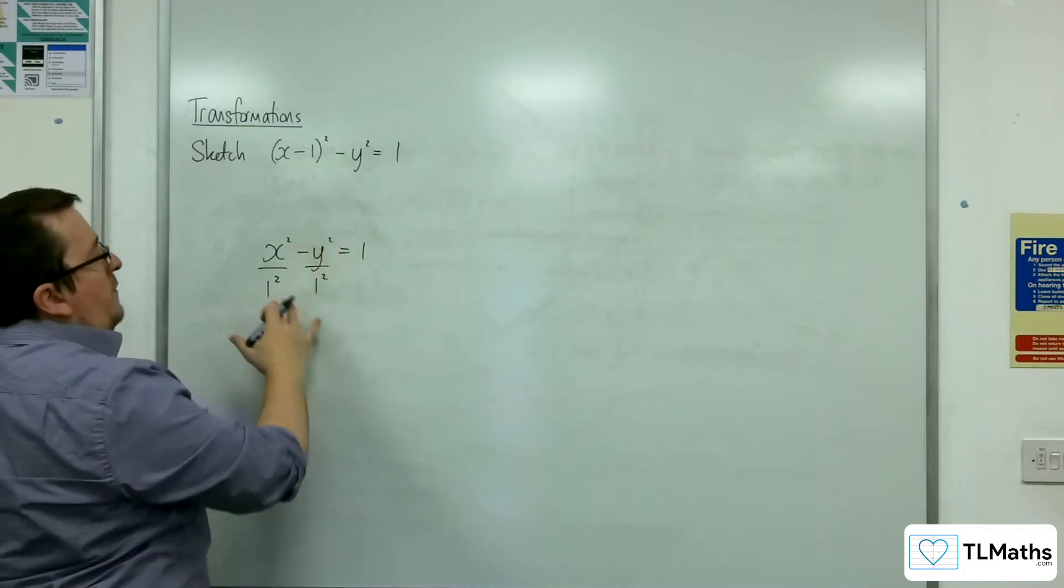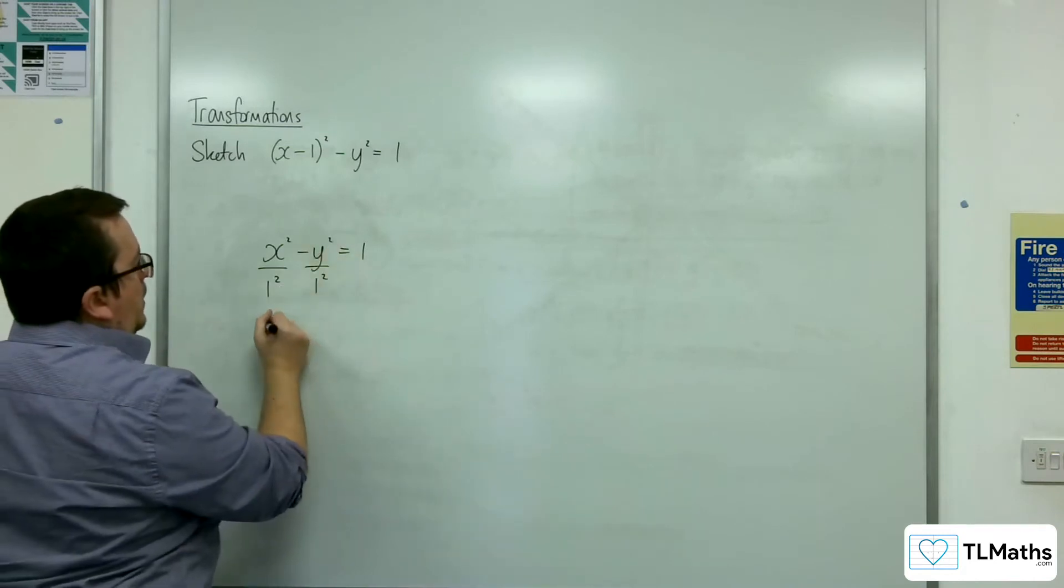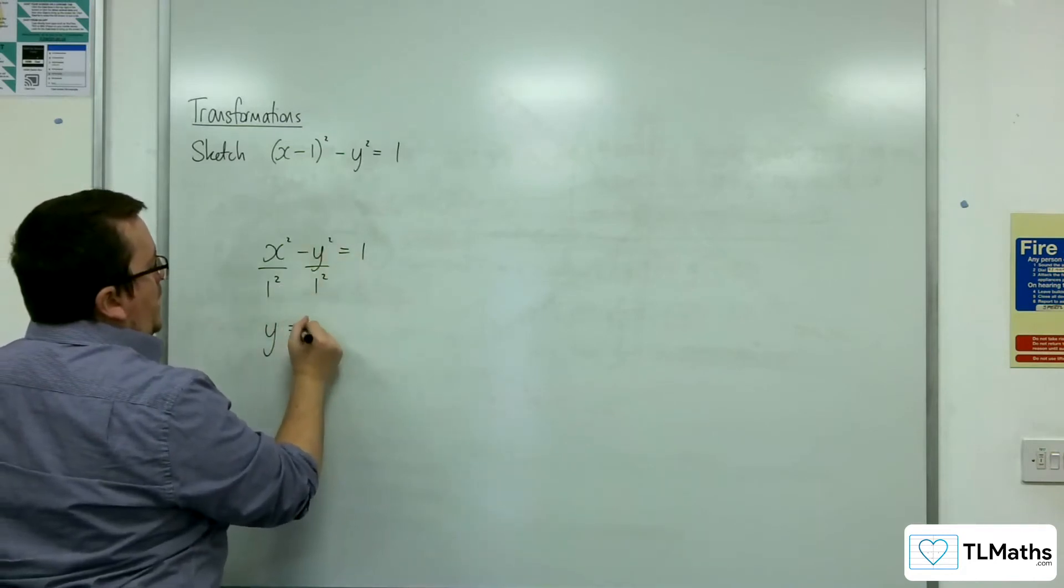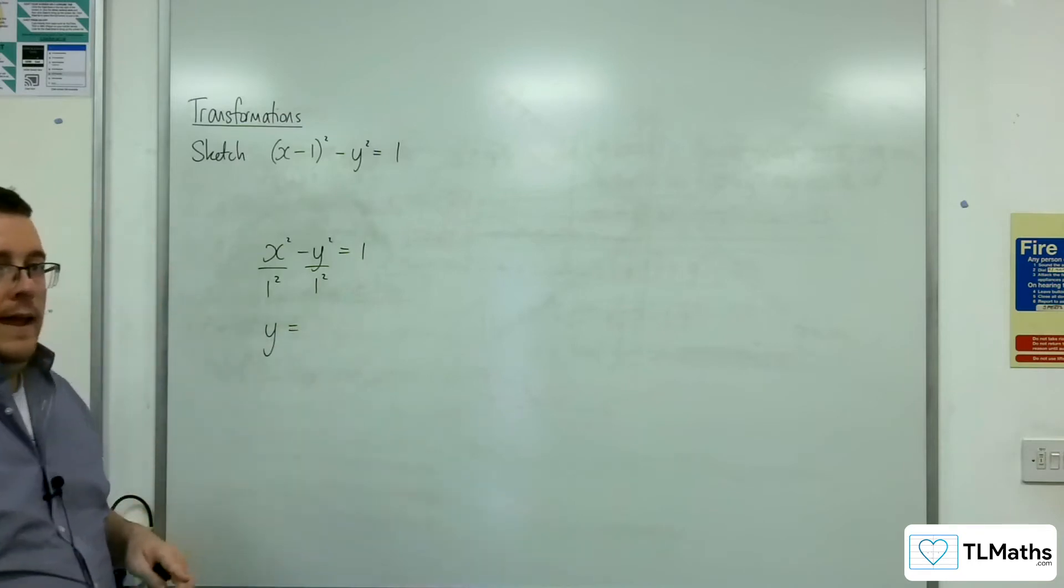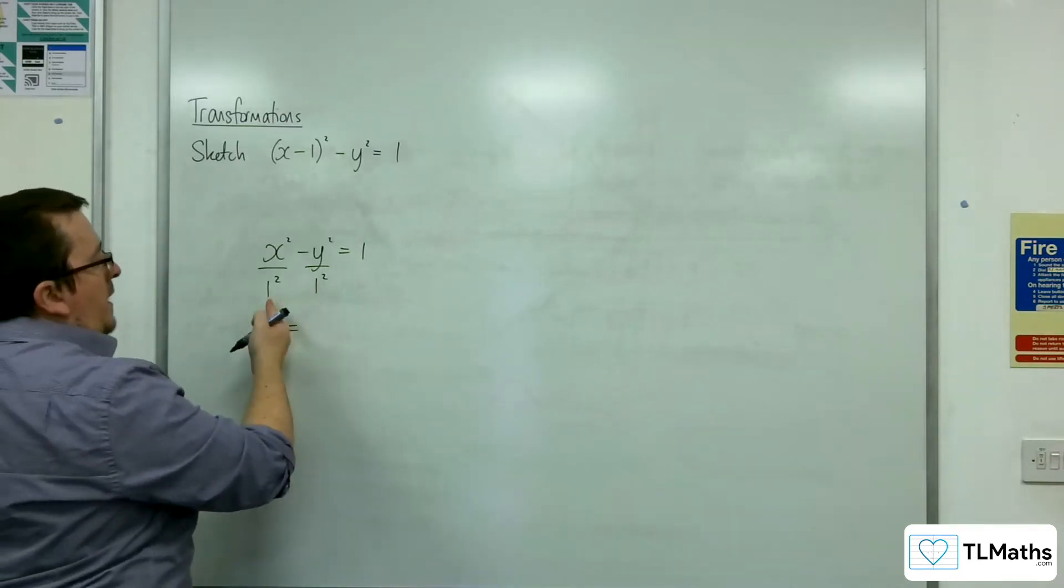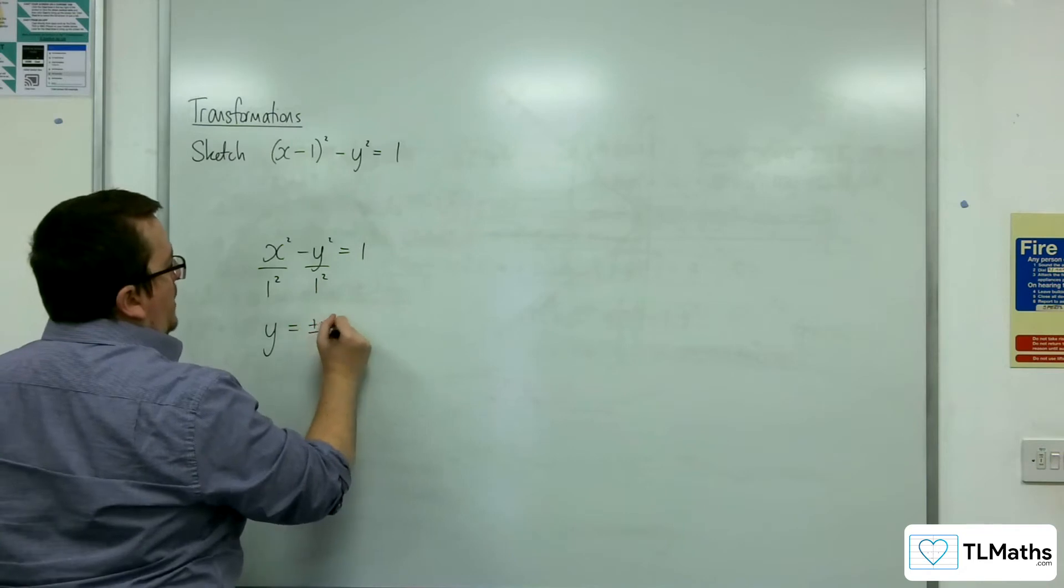So that means that this graph has asymptotes where they are of the form y equals plus or minus b over a times x. Now, b is 1, a is 1, and so you've got plus or minus x.